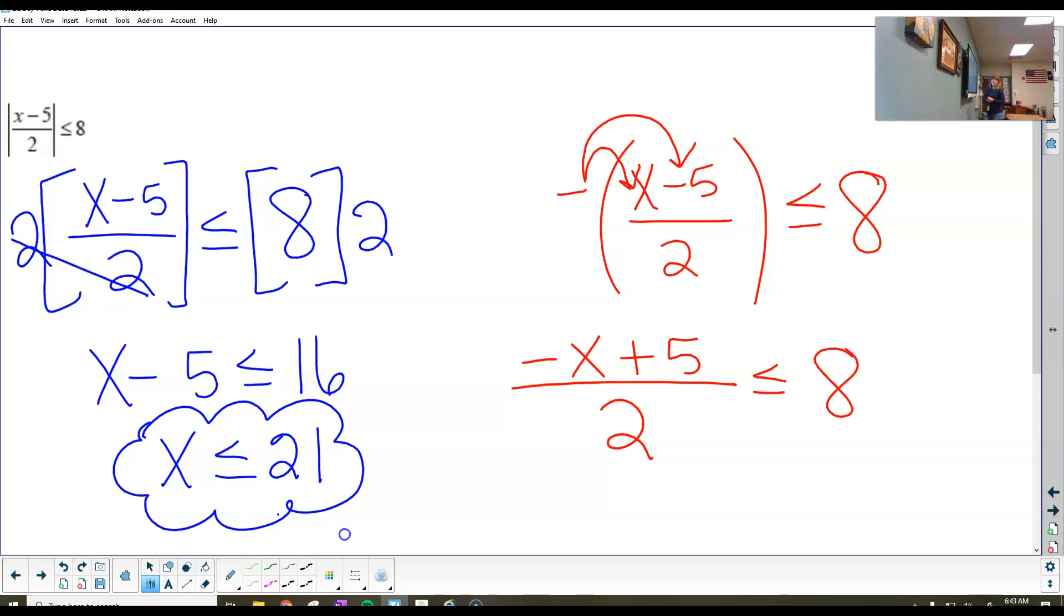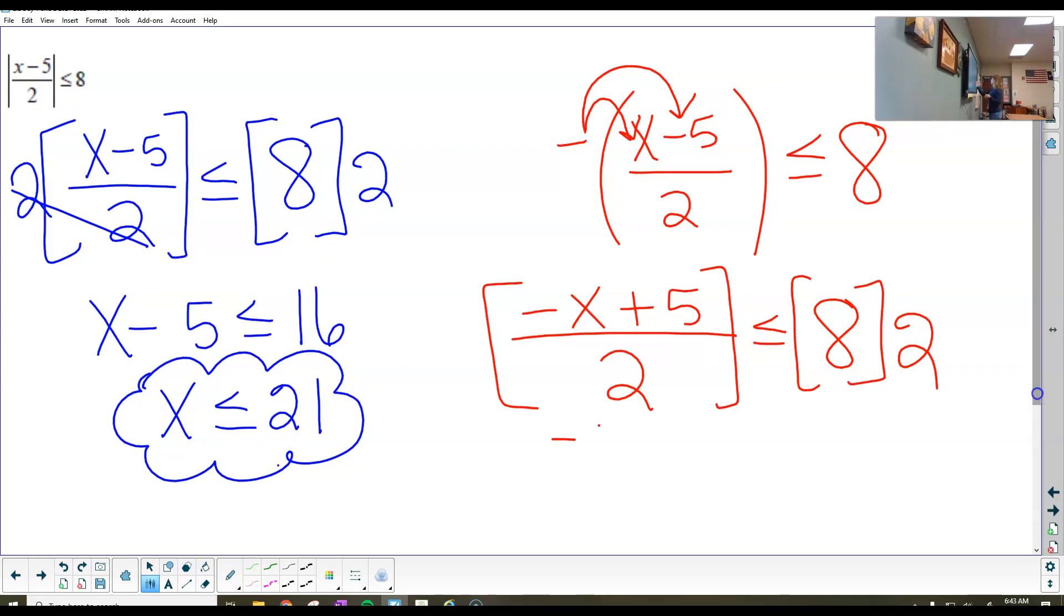And then from there, I can't solve for x because that 2 is in the denominator. Now we're going to get rid of the denominator by multiplying both sides by 2. So we're going to end up with negative x plus 5, and that's going to be less than or equal to 16. We're going to subtract 5 from both sides. So we get negative x is less than or equal to 11.